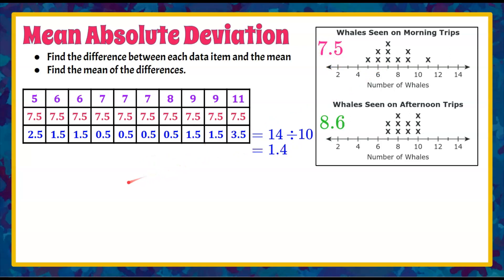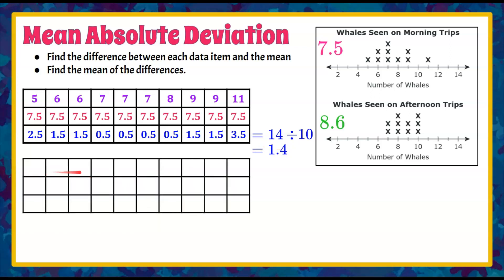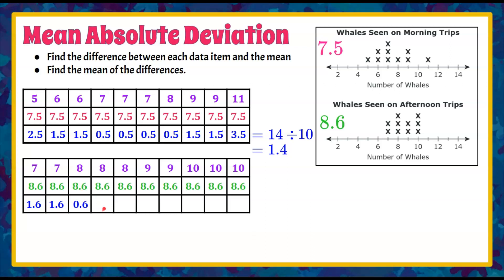Now let's find the mean absolute deviation for the afternoon. We'll make another table with all the data points from the line plot: seven, seven, three eights, two nines, and three tens. The second row is our average of 8.6 across all columns. The differences are: 7 to 8.6 is 1.6; 8 to 8.6 is 0.6; 9 to 8.6 is 0.4; and 10 to 8.6 is 1.4. Adding up the bottom row gives a sum of 10, and dividing by 10 gives a MAD of 1.